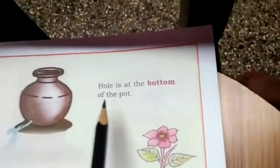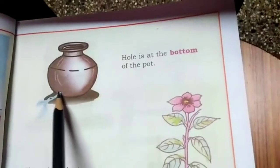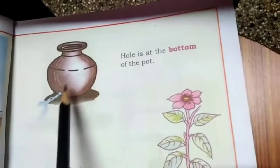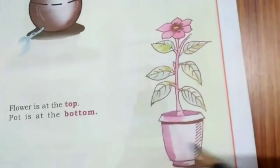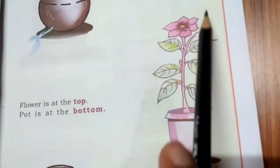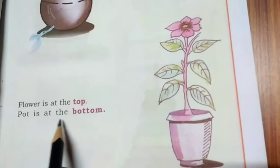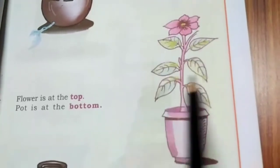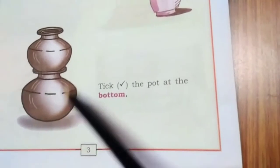Come to the next page — the hole is at the bottom of the pot. You can see the water flowing, so the hole is at the bottom of the pot. Here the flower is at the top of the pot and the pot is at the bottom. The pot is at the bottom and the flower is at the top.